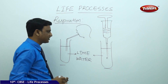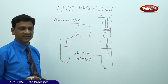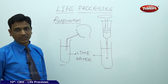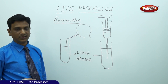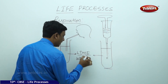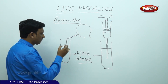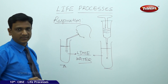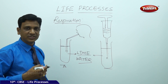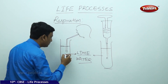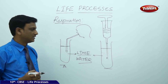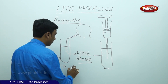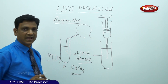For this activity, you need two test tubes with freshly prepared lime water. Lime water is made from calcium oxide mixed with water. When lime water reacts with carbon dioxide, it forms calcium carbonate. In the first test tube (labelled A), place a straw and blow air from your lungs — the exhaled air — into the freshly prepared lime water. The lime water turns milky, meaning it has reacted with carbon dioxide to form CaCO₃.